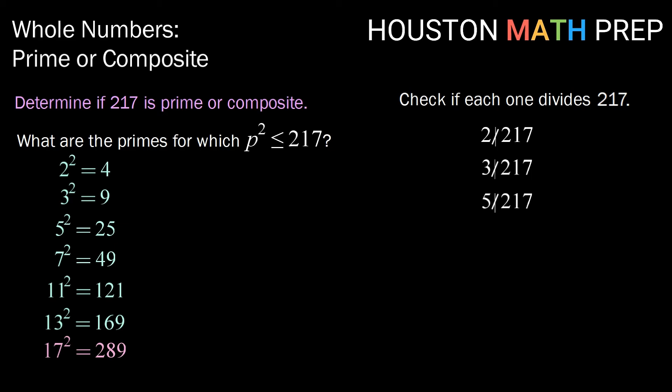5 does not divide 217 because it does not end in a 5 or a 0. But we can check and verify that 7 divides 217. Because that means that 217 has a divisor other than 1 and 217, we know that 217 is composite.